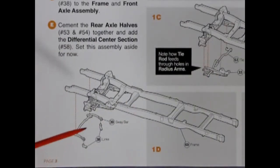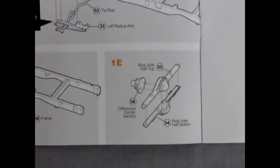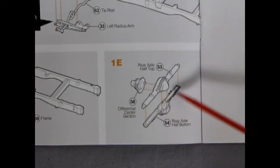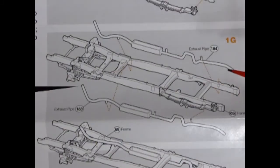Panel 1D shows our sway bar and our links gluing up underneath onto our frame. While panel 1E shows our three piece differential all gluing together. In panel 1F we start to glue the rear springs onto our frame. Panel 1G shows our exhaust pipes going up into the frame.